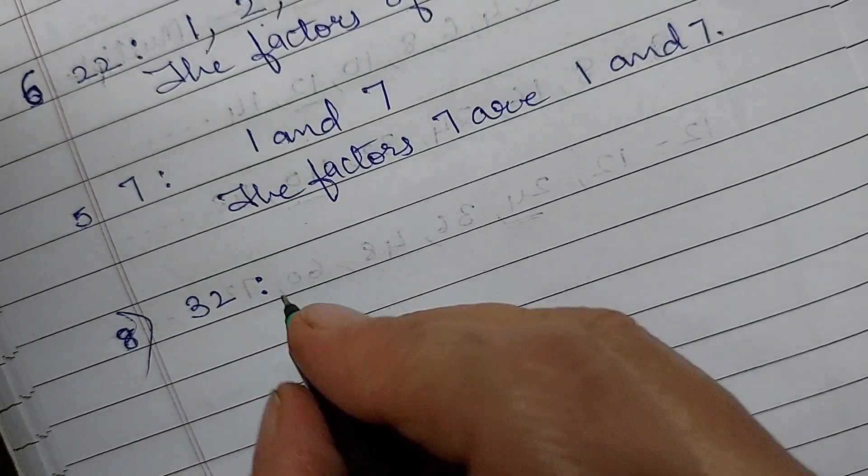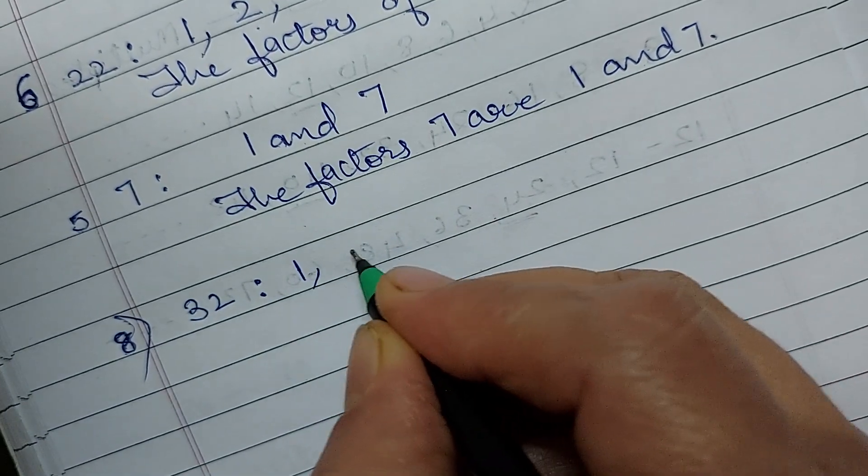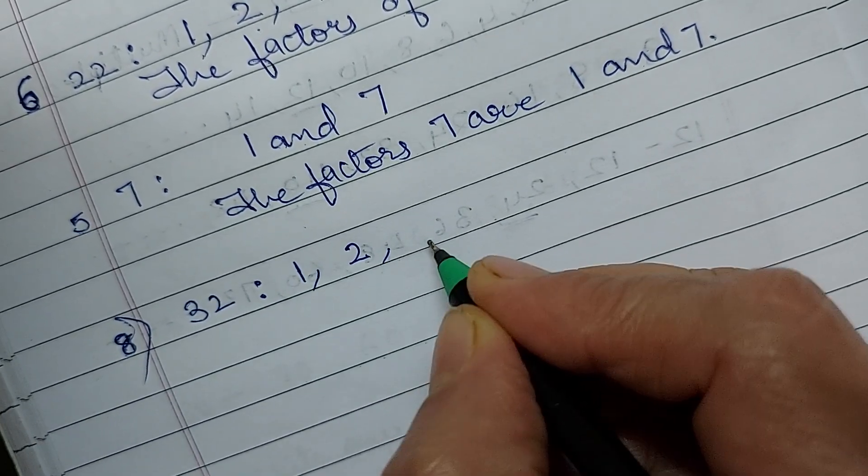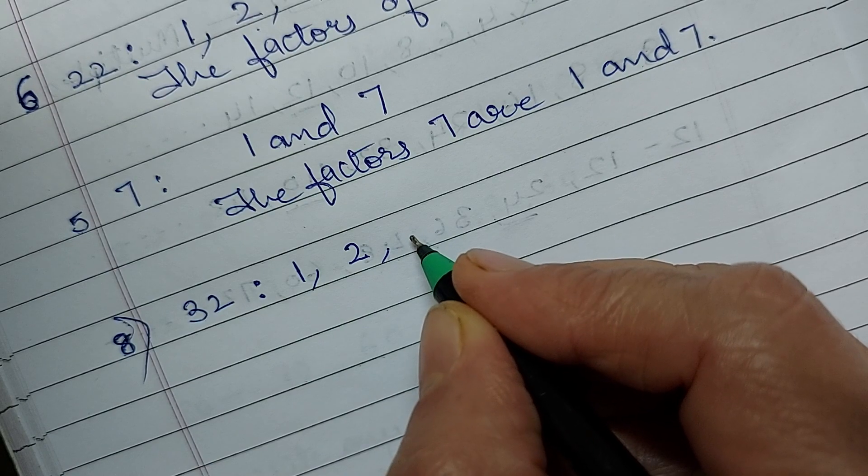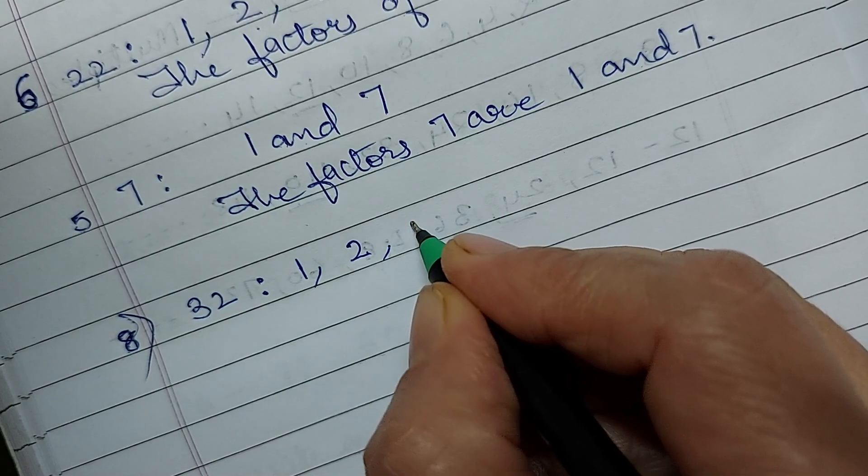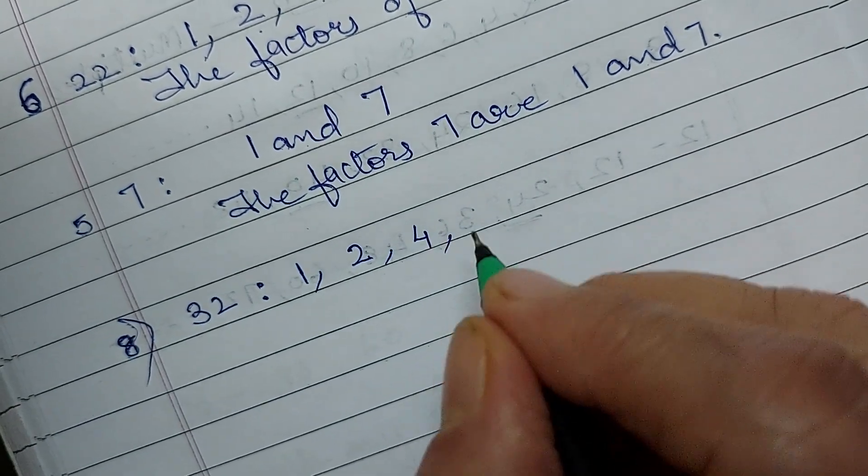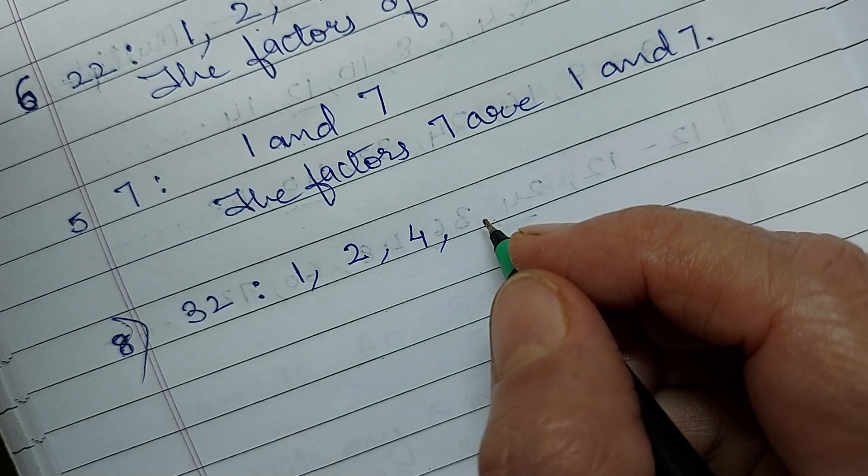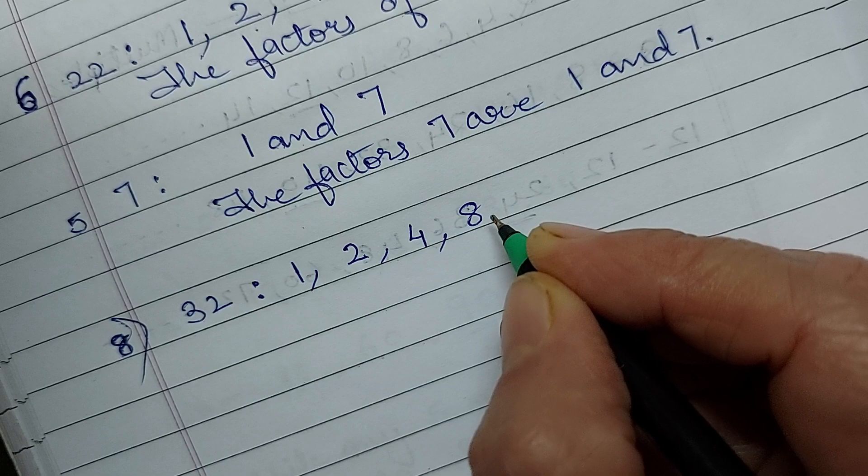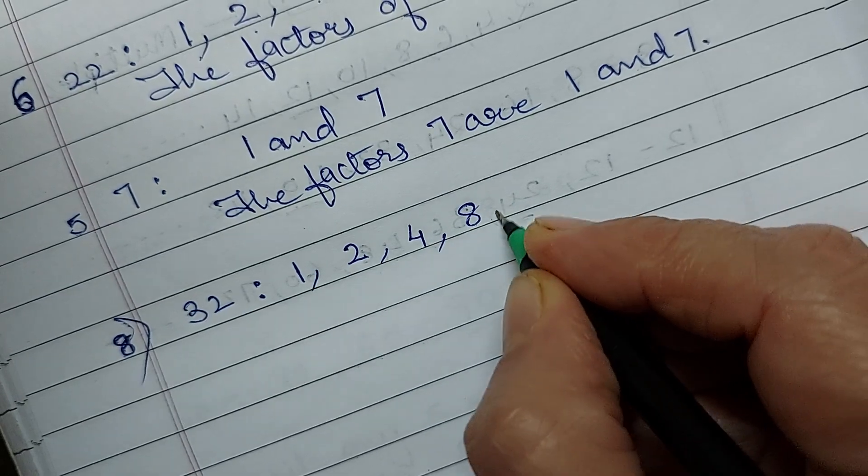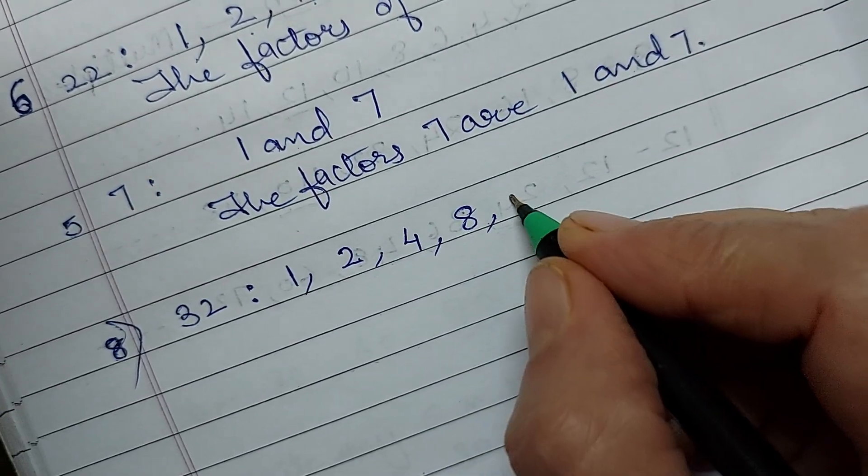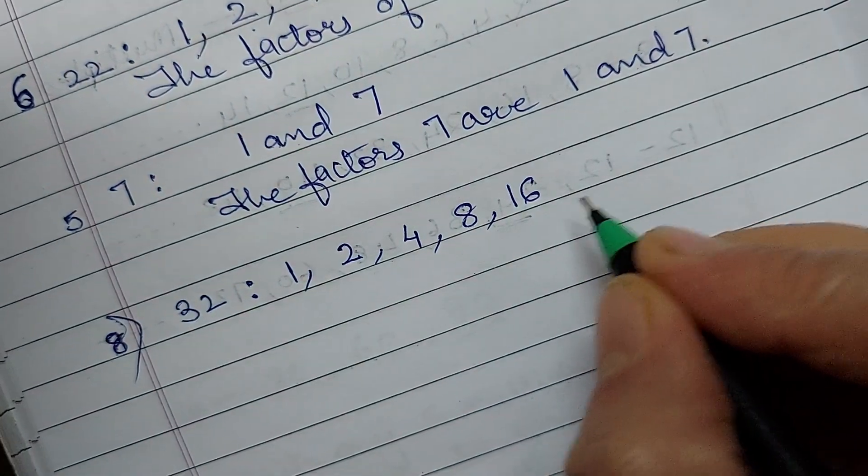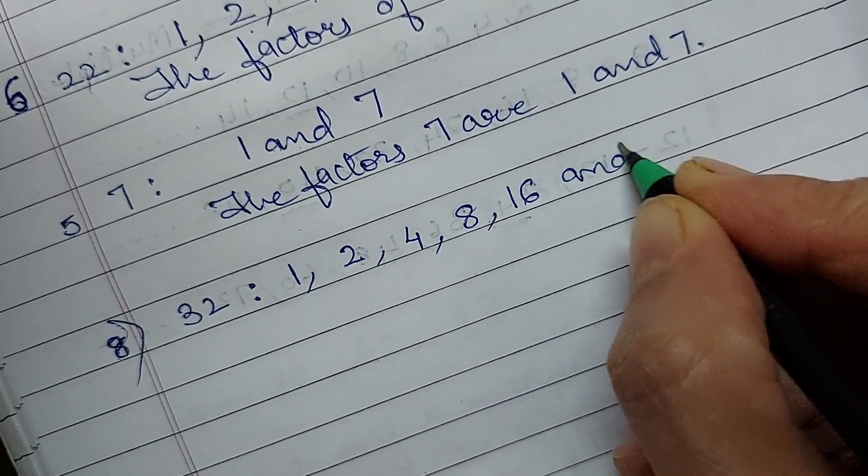So 32 comes in the table of 1, 2, 3 table 32 will come? No. It is 4, 8 fours are 32. 5th table no. 6th table again no. 7 no. 8, 4 eights are 32. Then 16 will come. Yes. 16, 2 sixteens are 32 and 32.